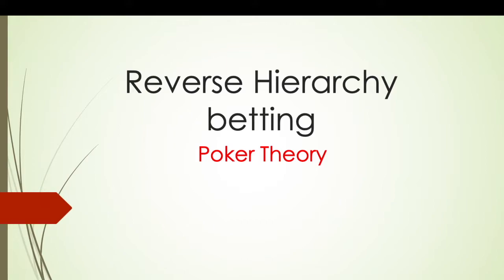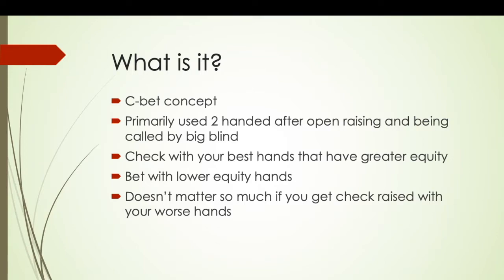In this episode I'm going to be going over reverse hierarchy betting. So what is it? It's basically a continuation bet concept, primarily used two-handed after open raising and being called by the big blind. The concept focuses around betting with your worst hands and checking with some of your real premium hands. This completely depends on factors such as board texture and what the opponent in the big blind is like.